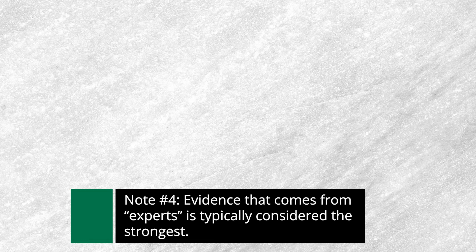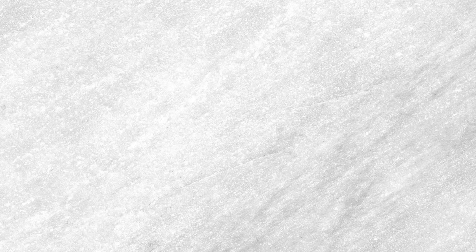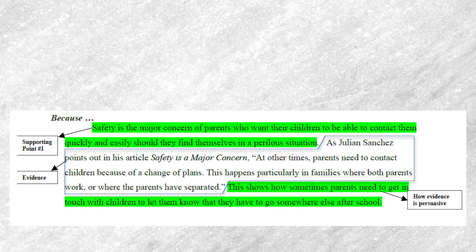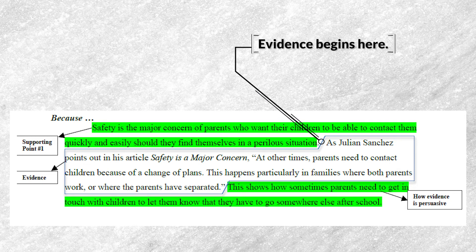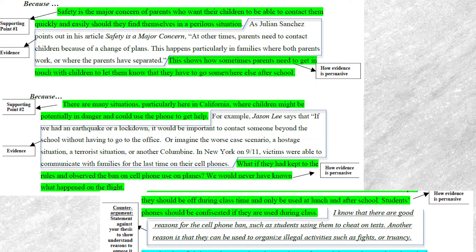Moving on from that, if you look back at those three arguments the side against banning cell phones had, you can see their evidence just below their reasoning in each paragraph. Let's look at that real quick. If you want to pause the video and read through these, this would be a good time — kind of look at those boxes that have the evidence highlighted. After going through those and reading their evidence, it brings me to our last point for today.